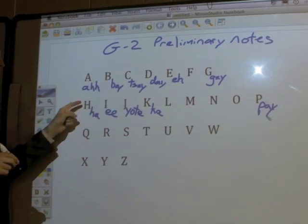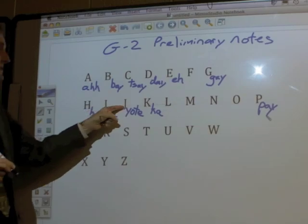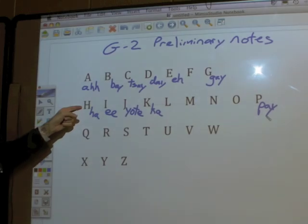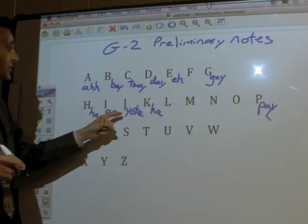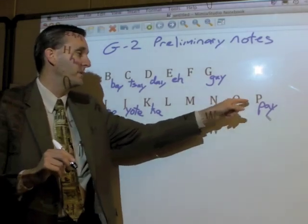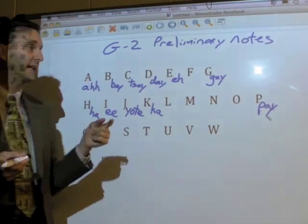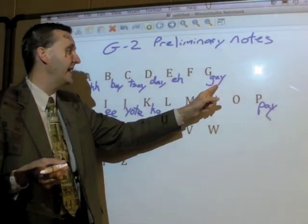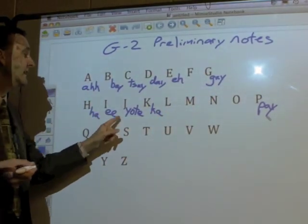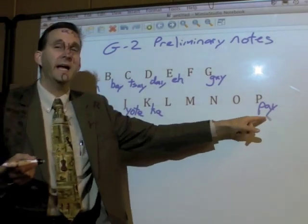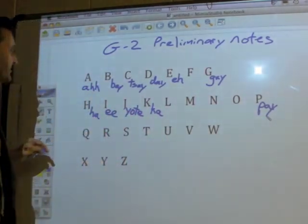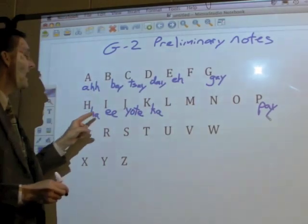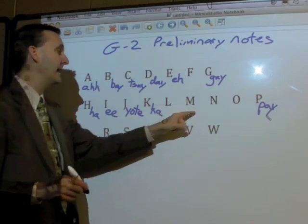Let's pronounce this line: ha, ee, yote, ka, l, m, n, o, pay. Once again: ha, ee, yote, ka, l, m, n, o, pay. Now from the beginning: ah, b, tse, d, ae, f, g, ha, ee, yote, ka, l, m, n, o, p. One more time a little faster: ah, b, tse, d, ae, f, g, ha, ee, yote, ka, l, m, n, o, p. Very good.